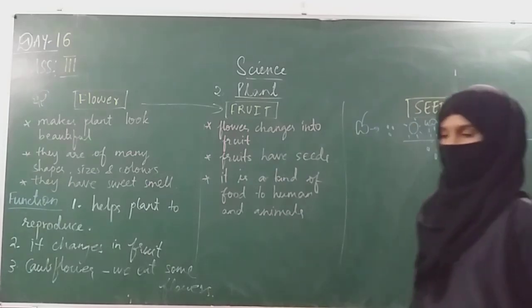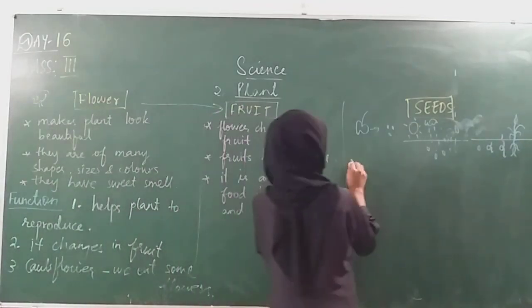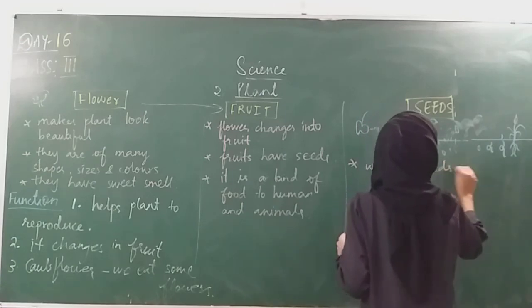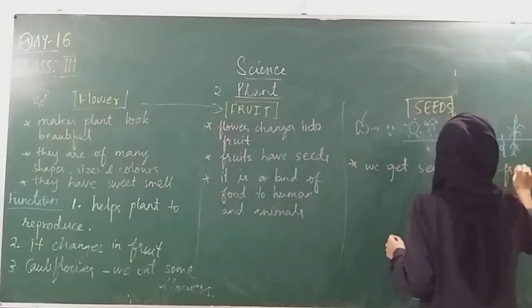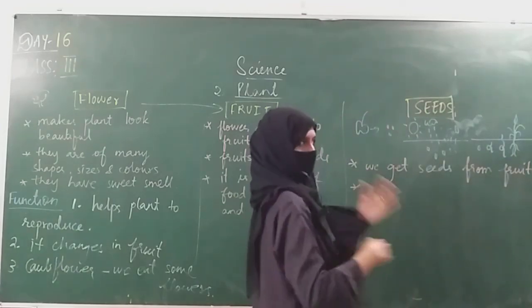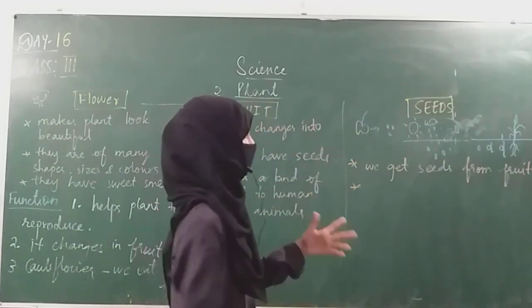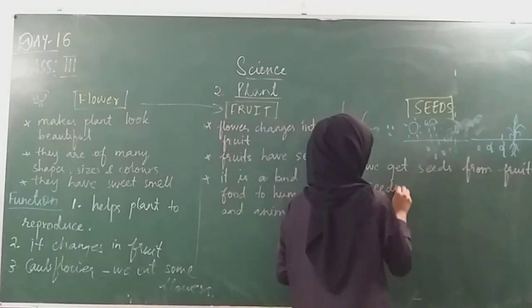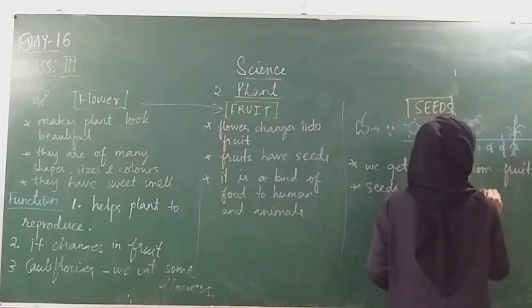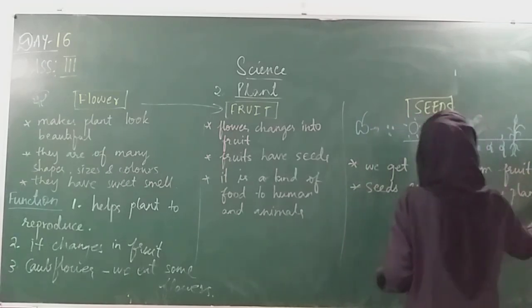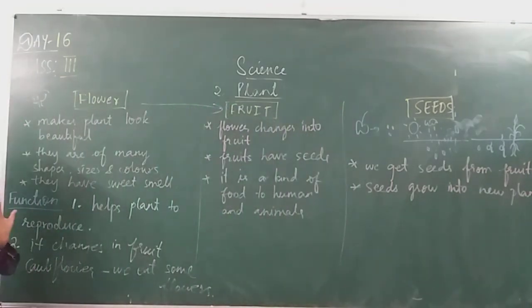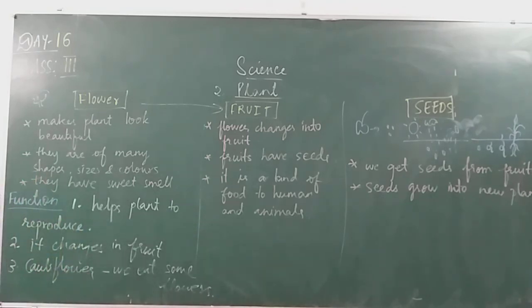We get seeds from fruits — that is the first point about seeds. Seeds reproduce with the help of air, water, and sunlight and grow into a new plant. Just like when plants cook food we call it photosynthesis, when a seed grows into a new plant, that process is called germination.